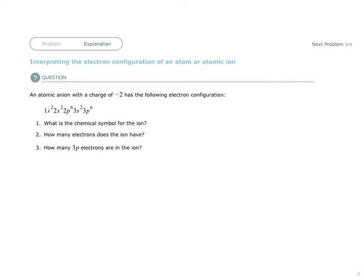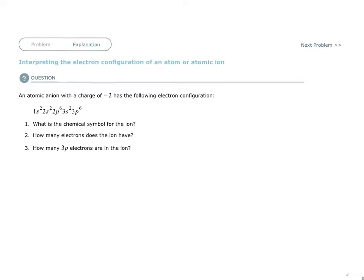It gives you an electron configuration of 1s2, 2s2, 2p6, 3s2, 3p6. So we want to find out what element has 3p6, where everything is up to 3p6.